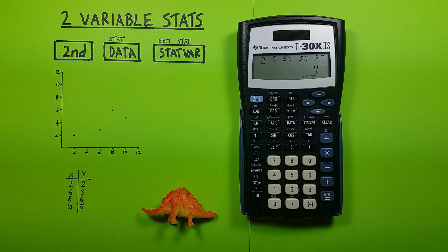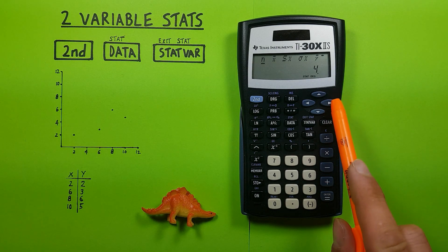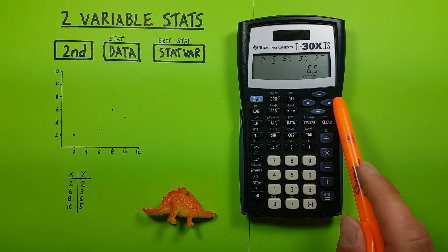This tells us that we had four sets of coordinates or four x's and y's. One, two, three, four, makes sense. And then we can see our mean of x's.